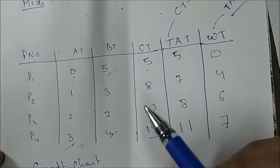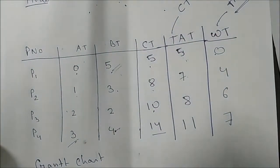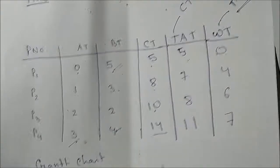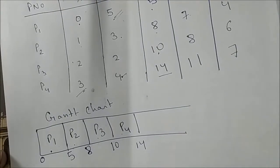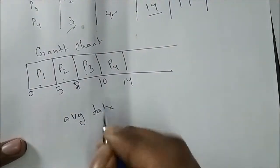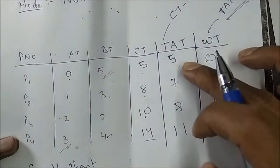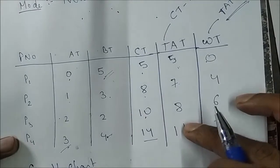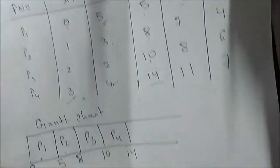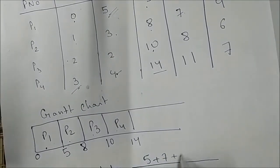In exams, they also ask for average turnaround time and average waiting time. For average turnaround time, sum all four process TAT values and divide by 4: (5 + 7 + 8 + 11) / 4. Please calculate the result.